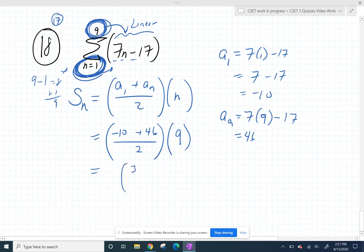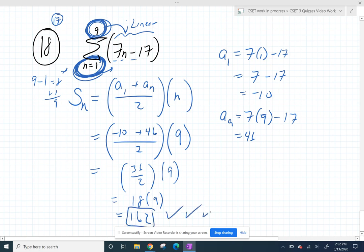And let's see. So we have 36 over 2 times 9. So 18 times 9. The hardest part is going to be that multiplication. You get 162. And we match our answer key. And all is right with the world.